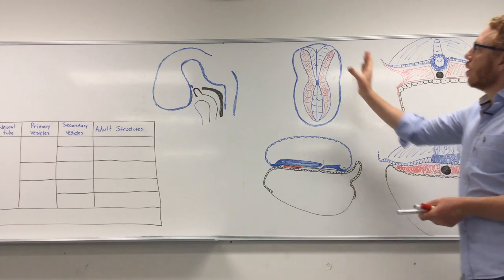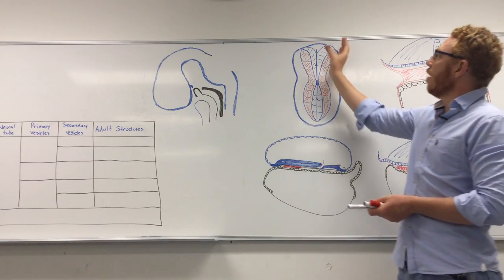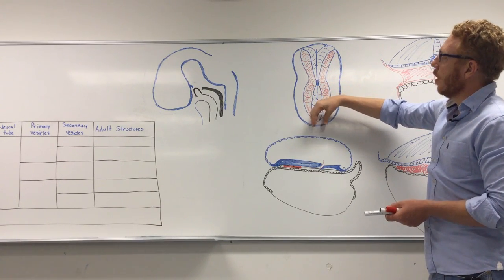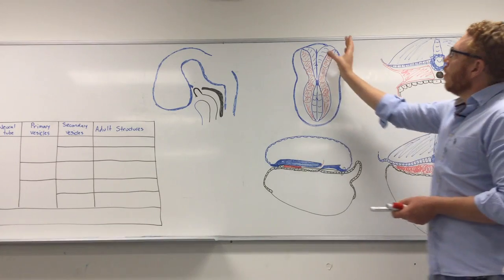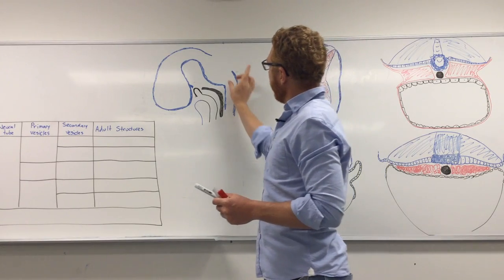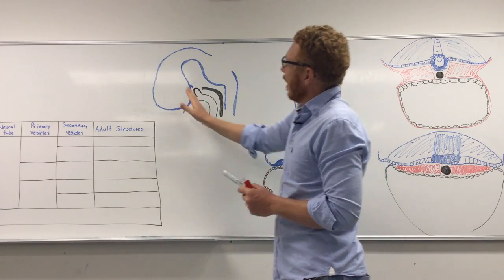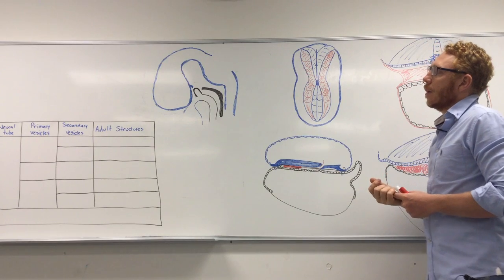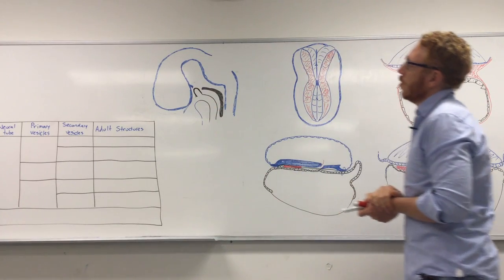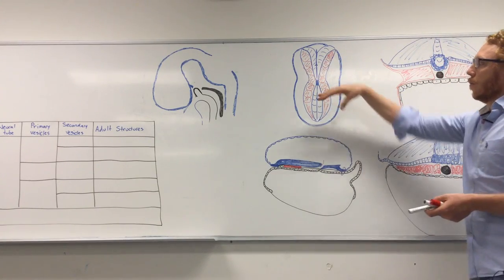Eventually it will close — first at the cranial end at about day 25, and about two to three days later at the caudal end. Where it closes cranially corresponds to a structure in the adult known as the lamina terminalis, which is close to the pituitary gland. So the cranial neuropore closes day 25, and the caudal closes at about day 27.